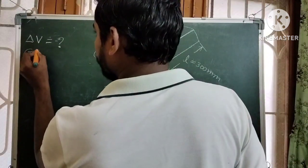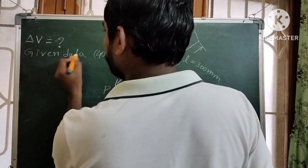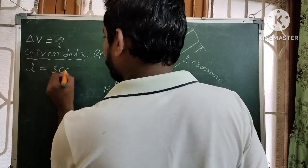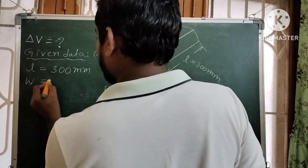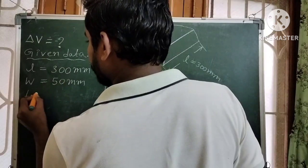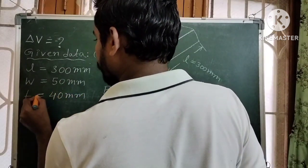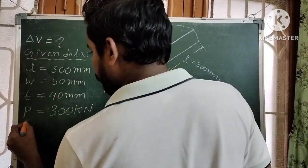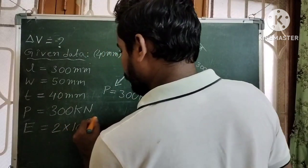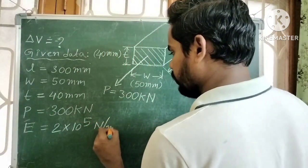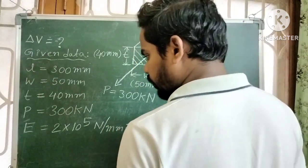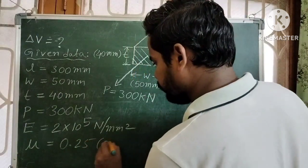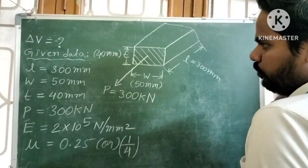Writing the given data: length of the bar L = 300 mm, width = 50 mm, thickness = 40 mm. The bar is subjected to axial pull, load P = 300 kilo Newton. Young's modulus E = 2 × 10⁵ N/mm², and Poisson's ratio μ = 0.25, which is equal to 1/4.